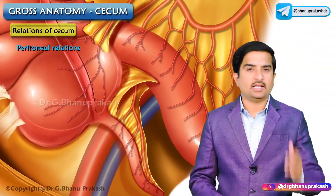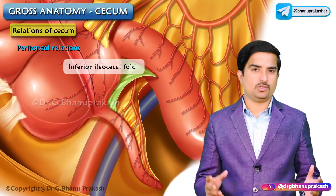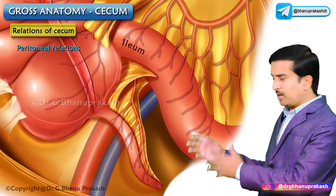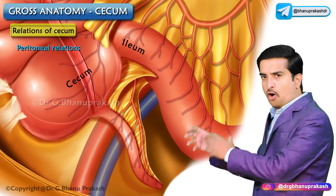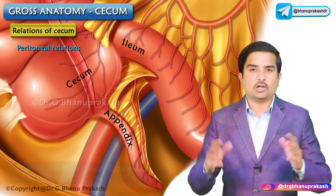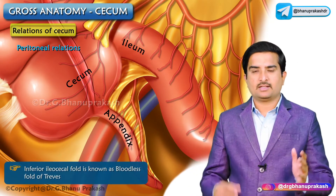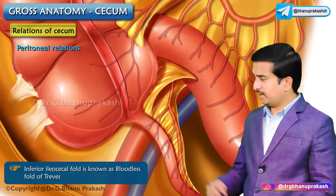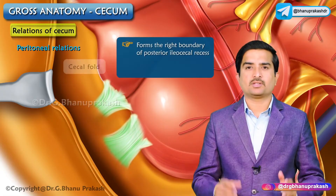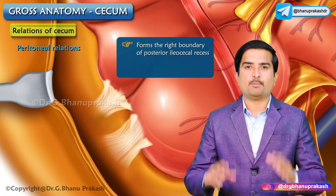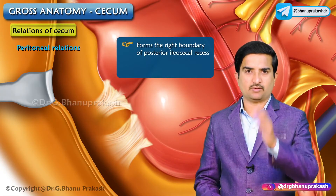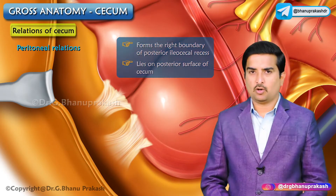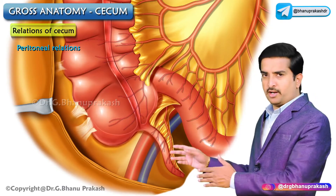The inferior ileocecal fold spreads from the antero-inferior aspect of the terminal part of the ileum to the cecum or appendix. It is also known as the bloodless fold of Treves, as it does not contain blood vessels. The cecal fold forms the right boundary of the posterior ileocecal recess, lying on the posterior surface of the cecum.